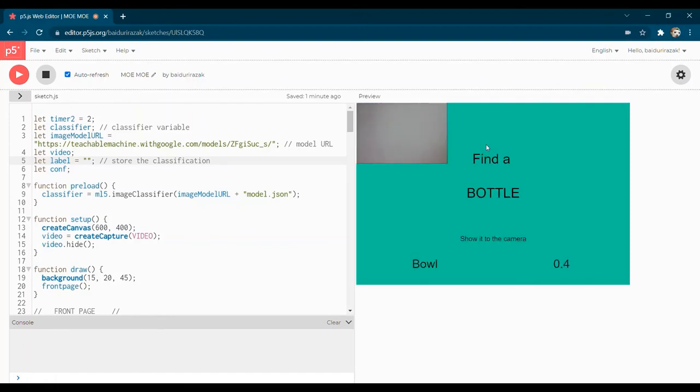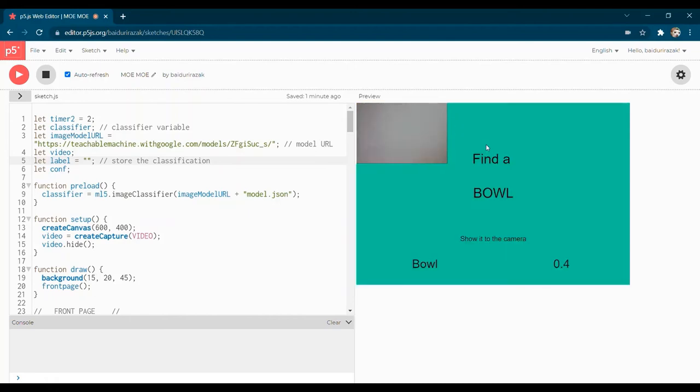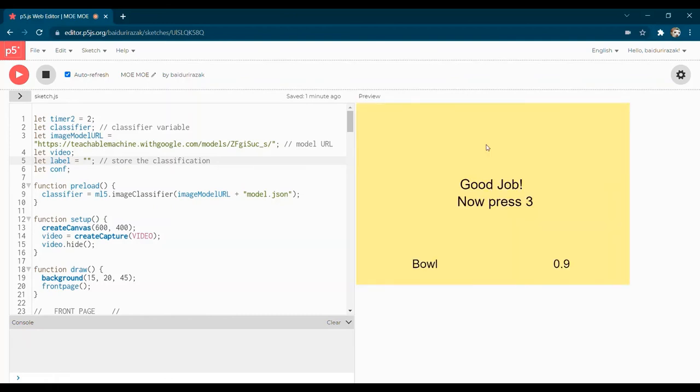The game starts with a canvas front page and key press function. When the S key is pressed, a delay of two seconds will start to ensure that the user is ready. As the time is up, the user needs to find the instructed object and show it to the camera.